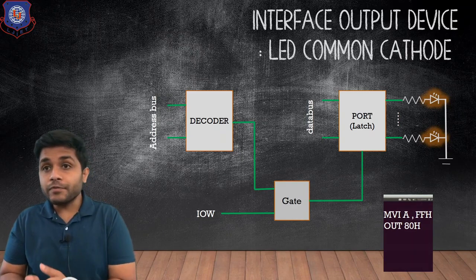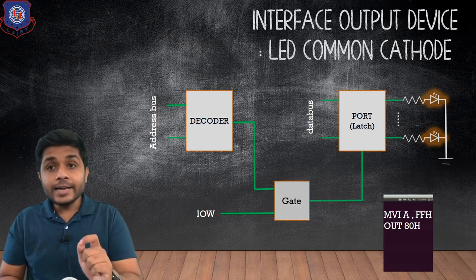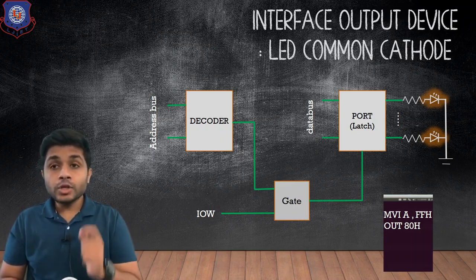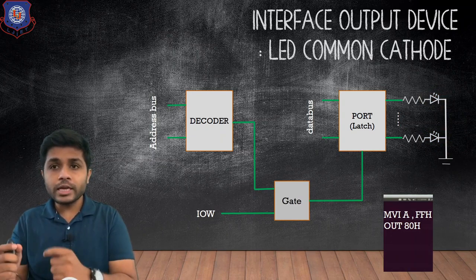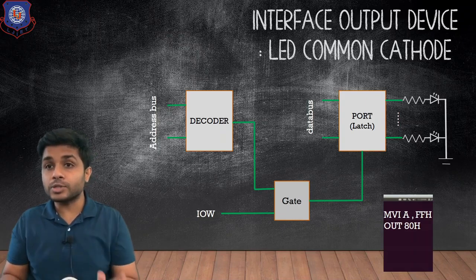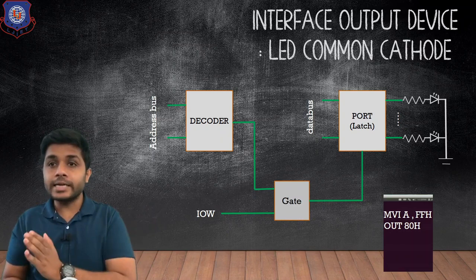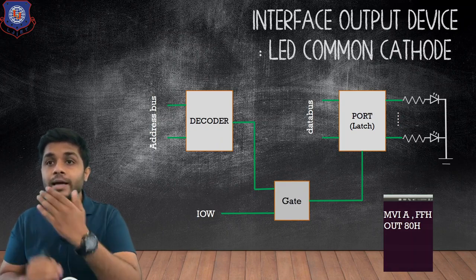If we use buffer instead of latch, the LED will glow and turn off in a fraction of time — it will turn on and turn off so quickly that we are not able to see it. This is because a buffer just passes the data without storing it. So if we want to interface any output device we will use latch, because we want to keep all the LEDs glowing.